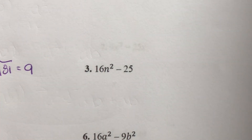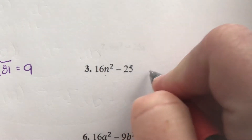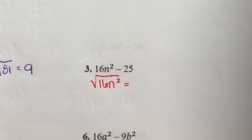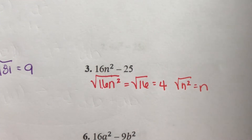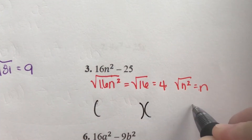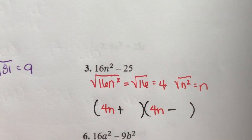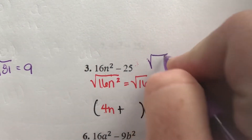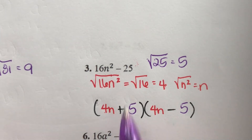Do we have two perfect square terms? Yes. 16 is a perfect square, n² is a perfect square. The square root of 16n² is 4n — square root of 16 is 4, square root of n² is n. So the first term in each binomial is 4n. Then find the square root of 25, which is 5. So our answer is (4n+5)(4n-5).